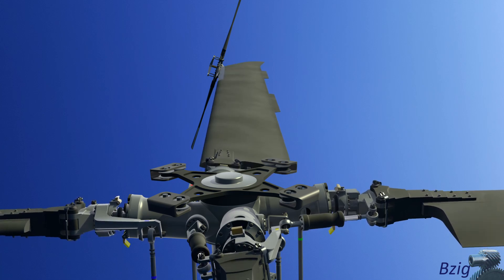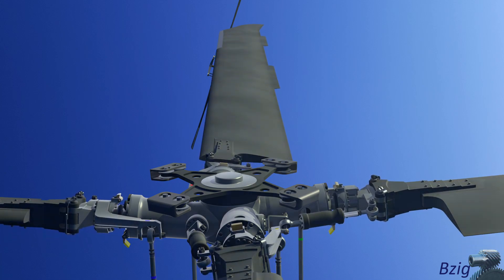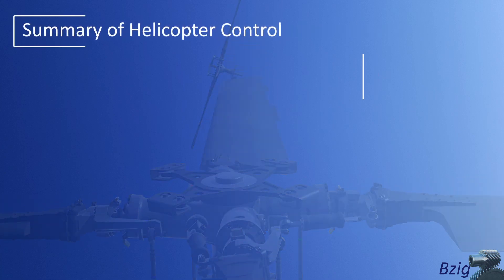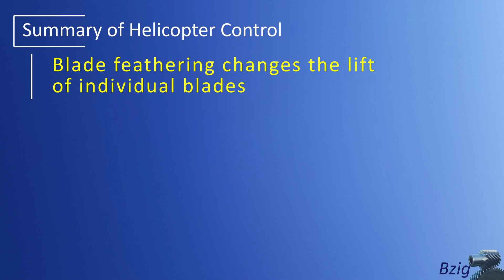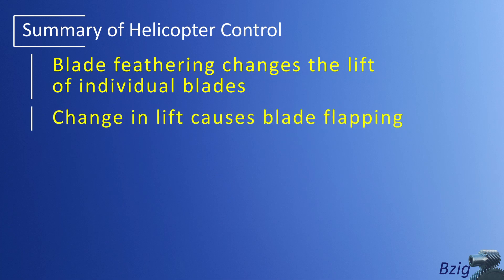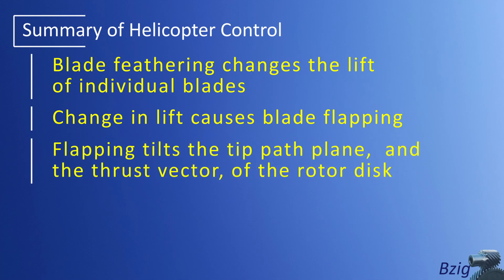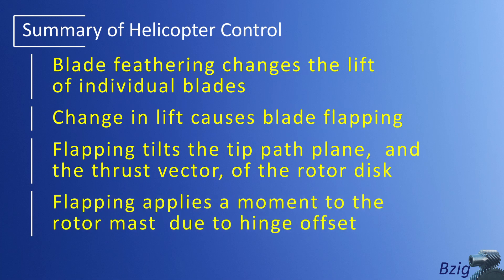A summary of this control concept: blade feathering changes the lift of the individual blades; this change in lift causes blade flapping; flapping tilts the tip path plane and the thrust vector; and flapping creates a control moment on the rotor mast due to flapping hinge offset.